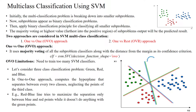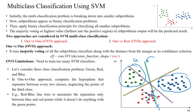Sub-problem 3 considers only the green and blue color data points. It does not consider the red color data points at all — you can see that this hyperplane falls on the red color data points. So sub-problem 3 considers green and blue color only. Here, this is one classifier, this is the second classifier, and this one is the third classifier. So three classifiers are used here — one for every two classes.